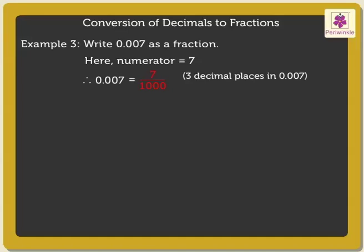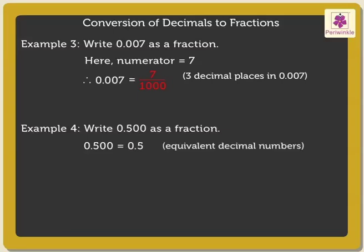One more to go: 0.500. We know that 0.500 is equal to 0.5 as they are equivalent decimal numbers. Since there is one decimal place in 0.5, we get the fraction as 5 upon 10.